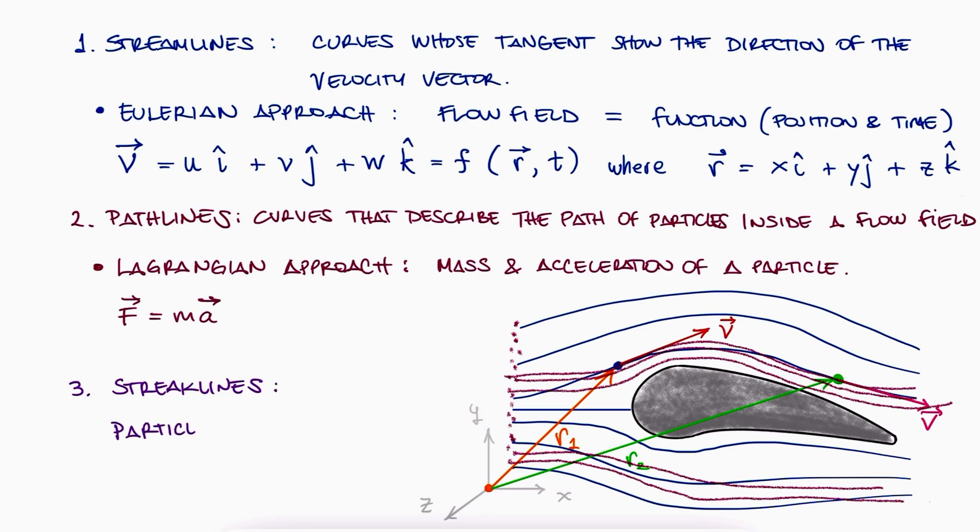Lastly, the streaklines can be obtained when we release particles into a single location within the flow field. Imagine we have a needle, a nozzle of some kind, submerged in the fluid, and remember that the fluid is not necessarily a liquid, it can be a gas, that releases particles at a specific location. In this scenario, all the particles would have the same initial position. The curves created by the flow of particles is what we call a streakline. Doing this for multiple locations would result in multiple streaklines.